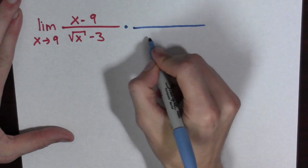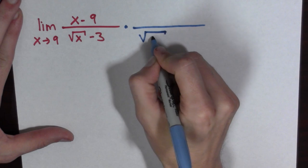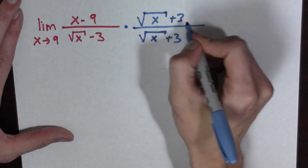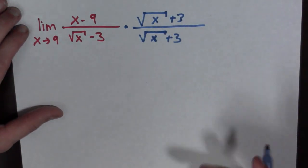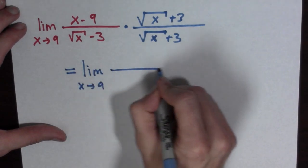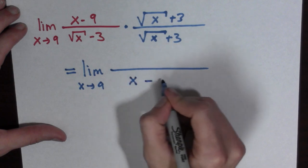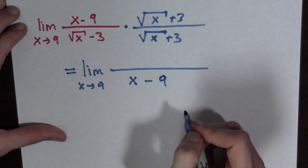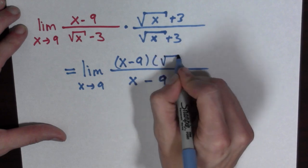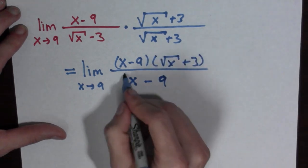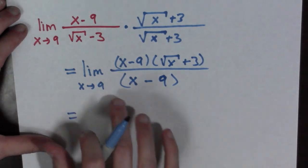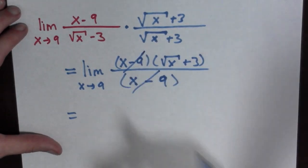So we multiply by the square root of x plus 3, over the square root of x plus 3. This equals the limit as x goes to 9. The denominator becomes x minus 9. However, we already have x minus 9 in the numerator along with the square root of x plus 3, so we don't even need to multiply it out. Since we're taking the limit and assuming x is not equal to 9, we can cancel the x minus 9 terms.